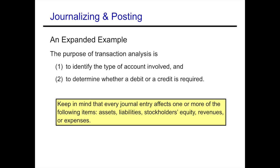When journalizing and posting, first make sure a transaction is actually happening. Once identified, figure out what accounts are affected, then determine how those accounts are affected — is it an asset that's increasing, an asset that's decreasing, a liability that's increasing, a liability that's decreasing, etc. Let's go through a few examples, analyze these transactions, journalize them, and then post them.